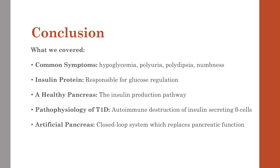We covered the pathophysiology of type 1 diabetes — that the autoimmune destruction of insulin-secreting cells is the underlying pathology. The artificial pancreas is modern medicine's answer to this problem. It's a closed loop system which replaces pancreatic function.